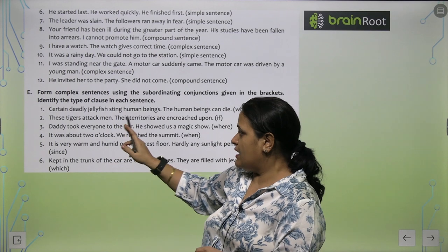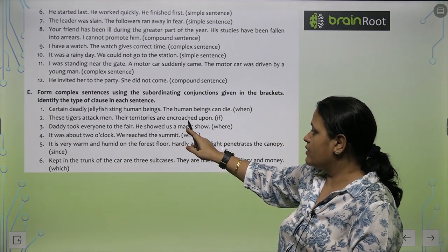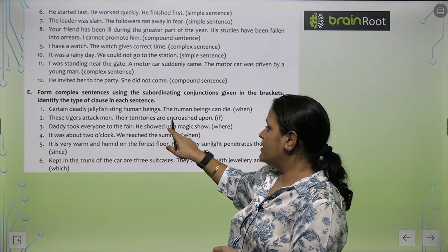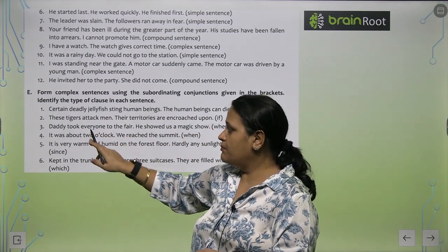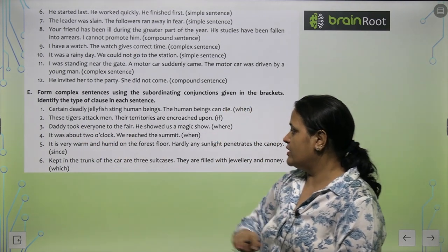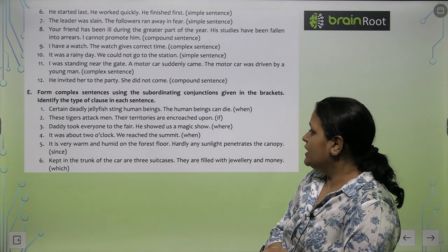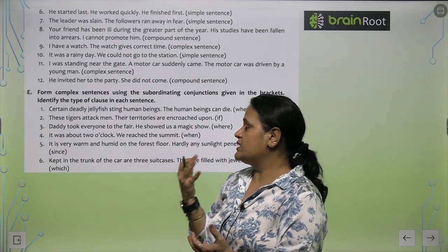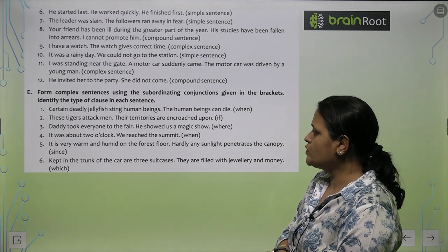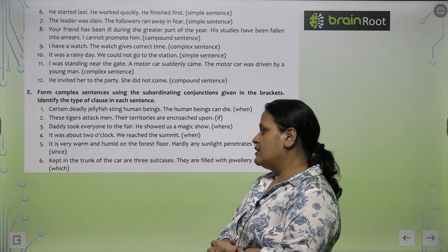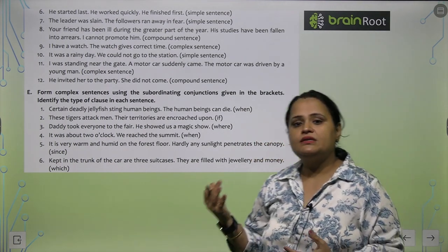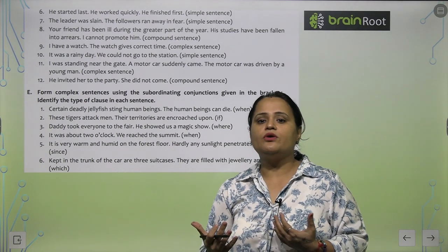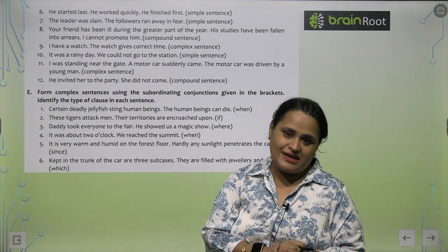'These tigers attack men. Their territories are encroached upon.' Combined: 'They can attack men when their territories are encroached upon.' 'Daddy took everyone to the fair. He showed us a magic show.' Here 'where' is used — 'Daddy took everyone to the fair where he showed us a magic show.' 'It was about 2 o'clock. We reached.' Combined: 'It was about 2 o'clock when we reached.' I hope that now this chapter is clear to you, and you can easily do the remaining points yourself. Thank you.